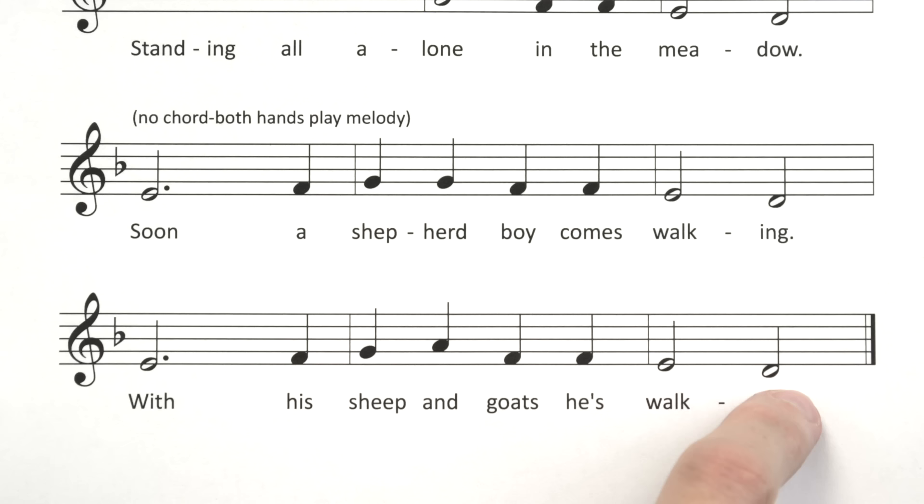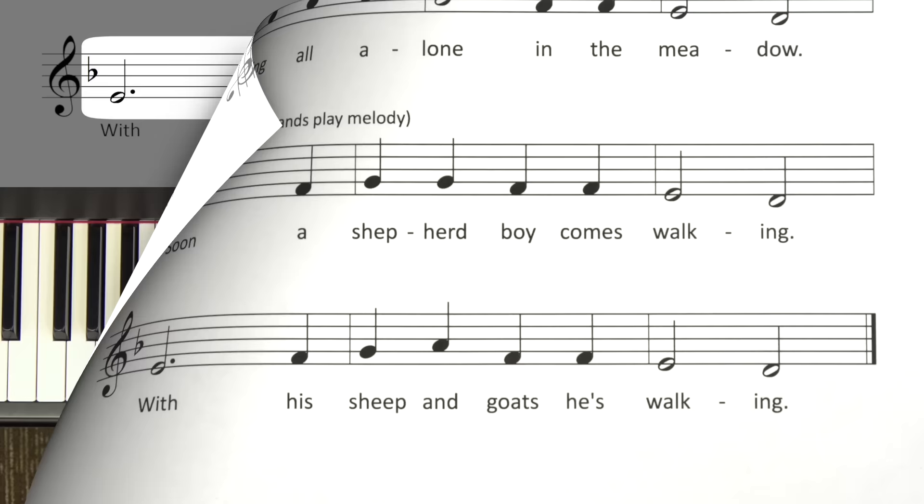Now, can you figure out the letter names for this line? Let's try to say the letter names. Try it by yourself once. It starts on E. Now you try the rest. E. The correct answer is E F G A F F E D. Now, let's try to play it on the piano.